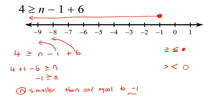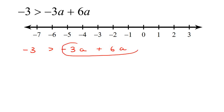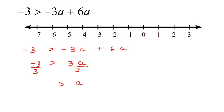Let's try another example. Step 1 is just to solve the equation. All the variables are together, so I'll combine them quickly. Minus 3 plus 6 gives us 3a. Then to get a by itself, we divide both sides by 3. Minus 3 divided by 3 is minus 1.